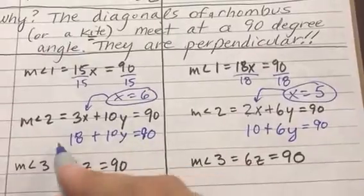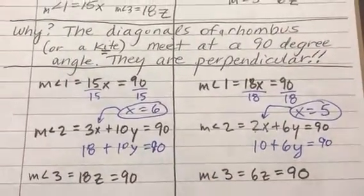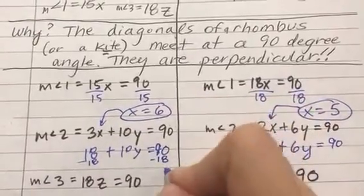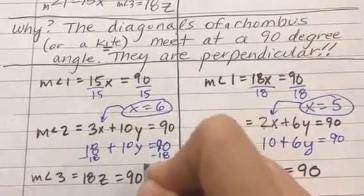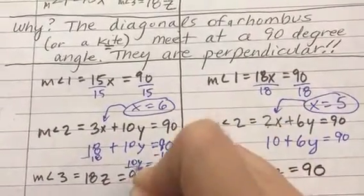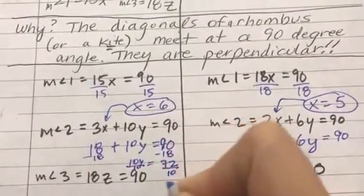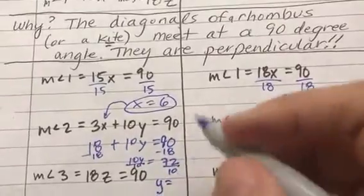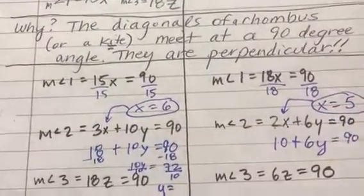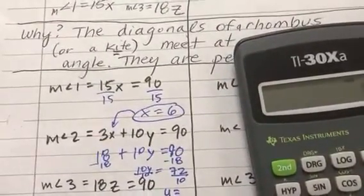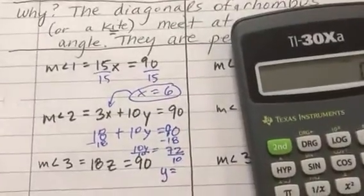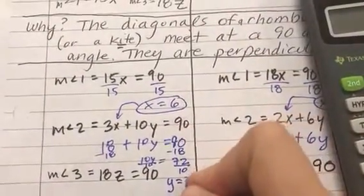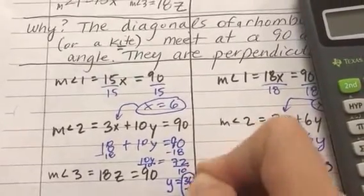So now we want to get y by himself on one side. So I'm going to subtract 18 on both sides. I get 10y. So if I divide 10 on both sides, y here would be 7.2. Or if I had to reduce the fraction, they're both even. So to reduce the fraction, half of 72 is 36. So I get 36 over 5. And that's my answer for y.